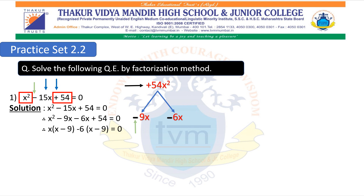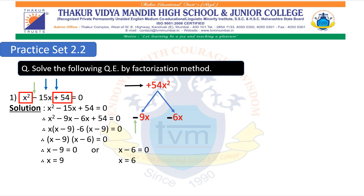Both brackets have the same value, x minus 9, which can be taken as common. The outer values x and minus 6 are written in a separate bracket, giving: x minus 9 into x minus 6 equals to 0. A bracket multiplied by a bracket equals 0 means either the first bracket or the second bracket equals 0. This gives: x minus 9 equals to 0 or x minus 6 equals to 0. Keeping the variable on the left hand side: x equals to 9 and x equals to 6. So the roots of the given equation are 9 and 6.